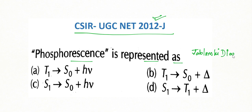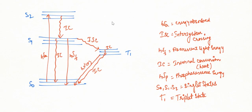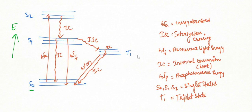This question is based on the Jablonski diagram. Let's discuss it in detail. In the Jablonski diagram, the y-axis is energy and the x-axis represents spin states. S₀ (S-naught) is the singlet ground spin state. As we move upward, singlet excited states increase in energy — S₁, S₂, and so on — while T₁ is our triplet excited state.